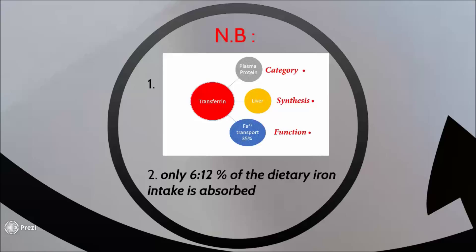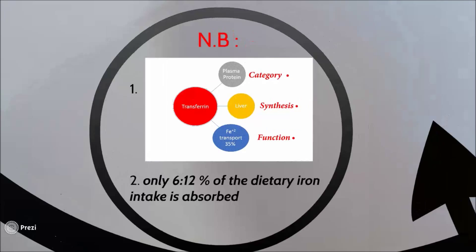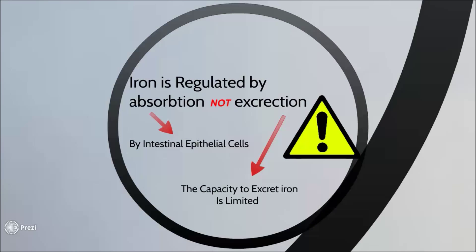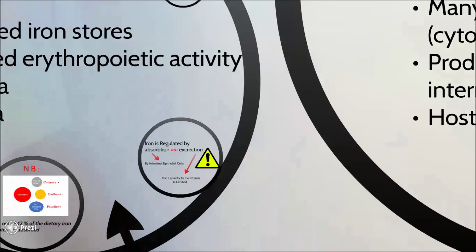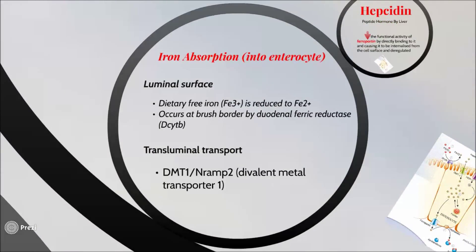Important notes before we start illustrating the mechanism: first, transferrin is a plasma protein synthesized in the liver, and its function is to transport iron. The maximum saturation present in a normal body is 35%, and this limited saturation allows maintenance of normal blood viscosity. Second, only 6 to 12 percent of the dietary iron intake is absorbed. The reason is the limited capacity for excretion of iron, so iron is regulated by absorption, not by excretion.